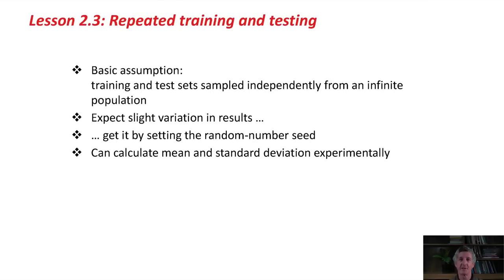Remember, the basic assumption is that the training and test sets are sampled independently from an infinite population. You should expect a slight variation in results, perhaps more than just a slight variation in results. You can estimate the variation in results by setting the random number seed and repeating the experiment. You can calculate the mean and standard deviation experimentally, which is what we just did.